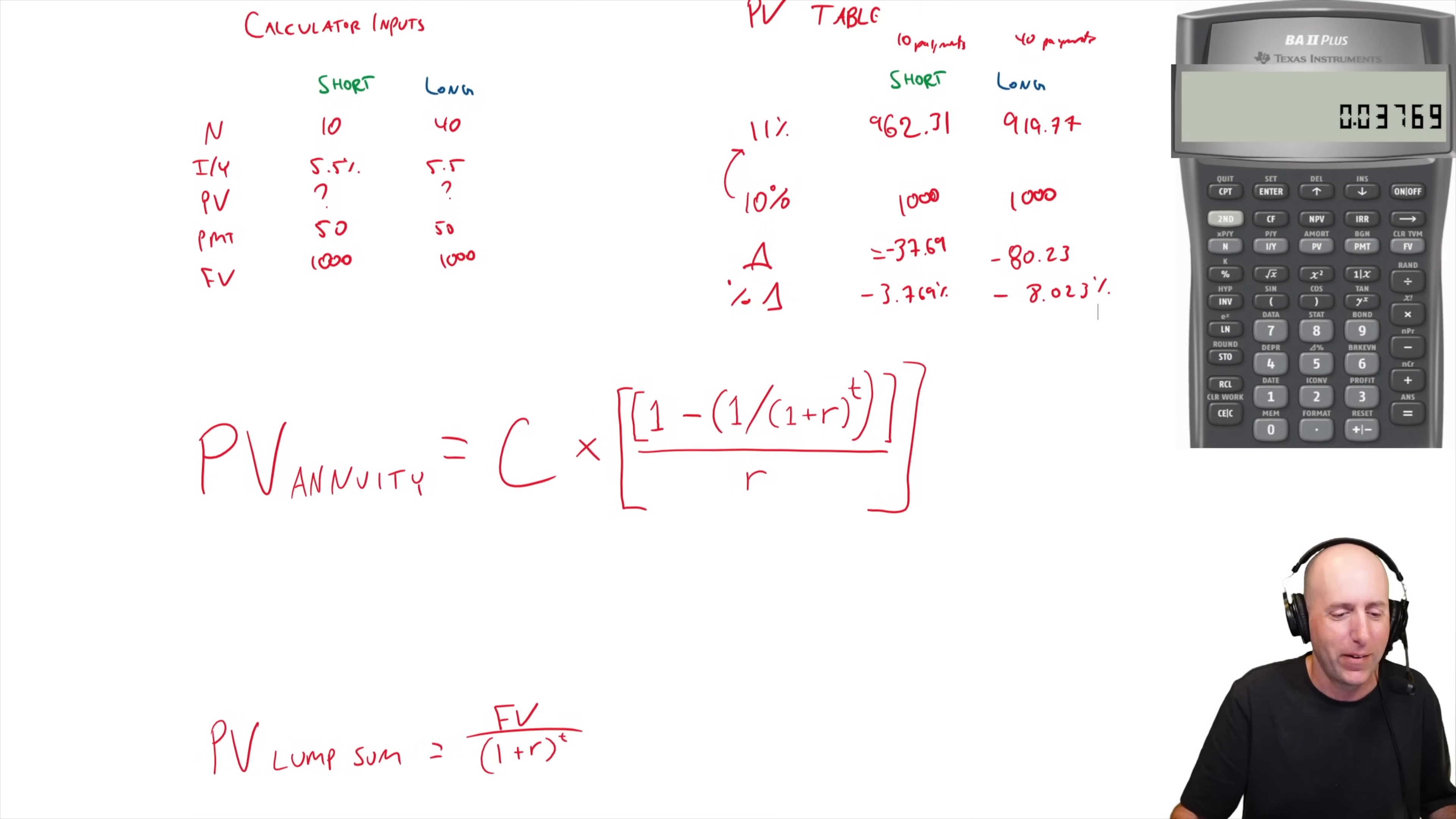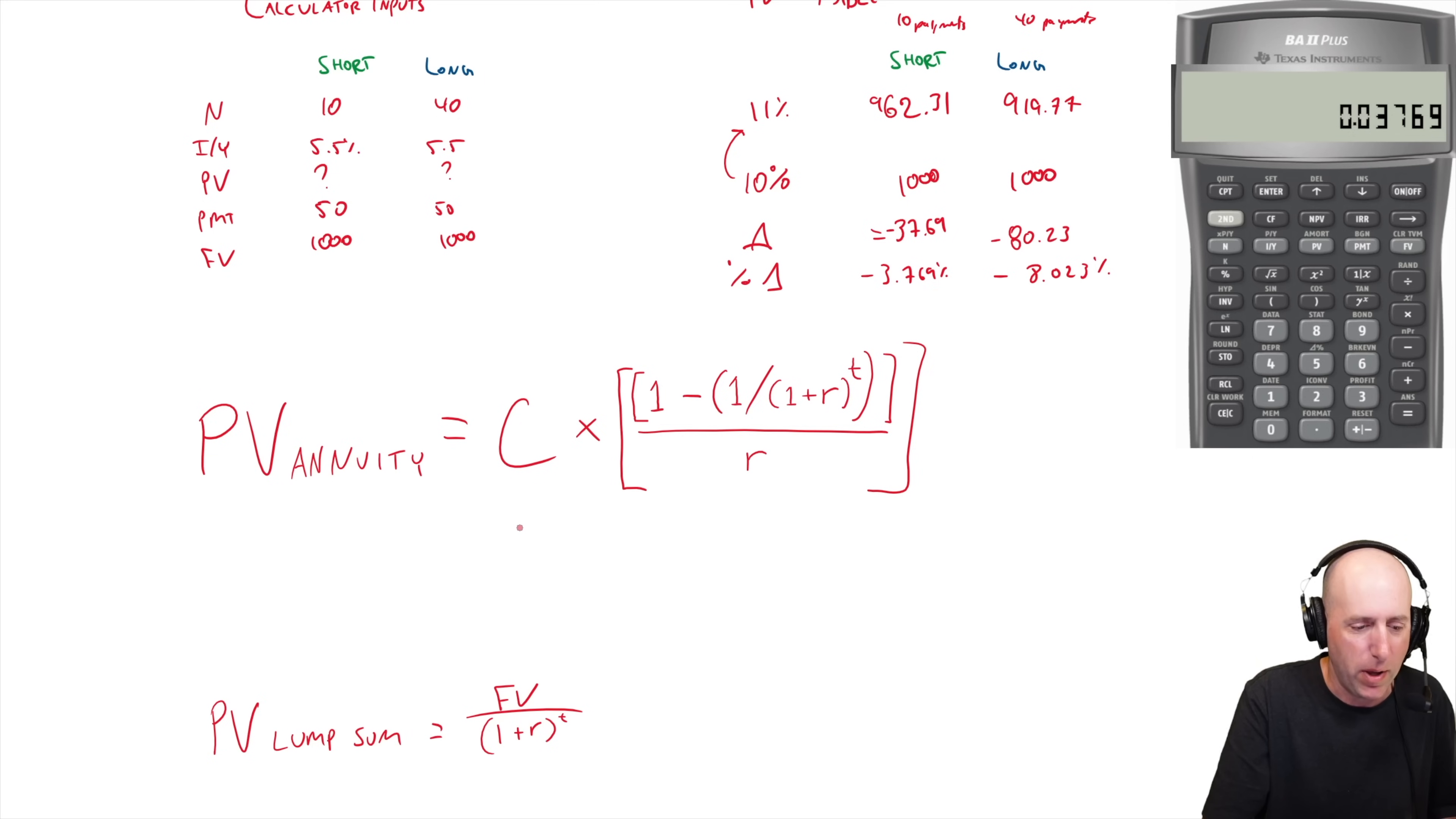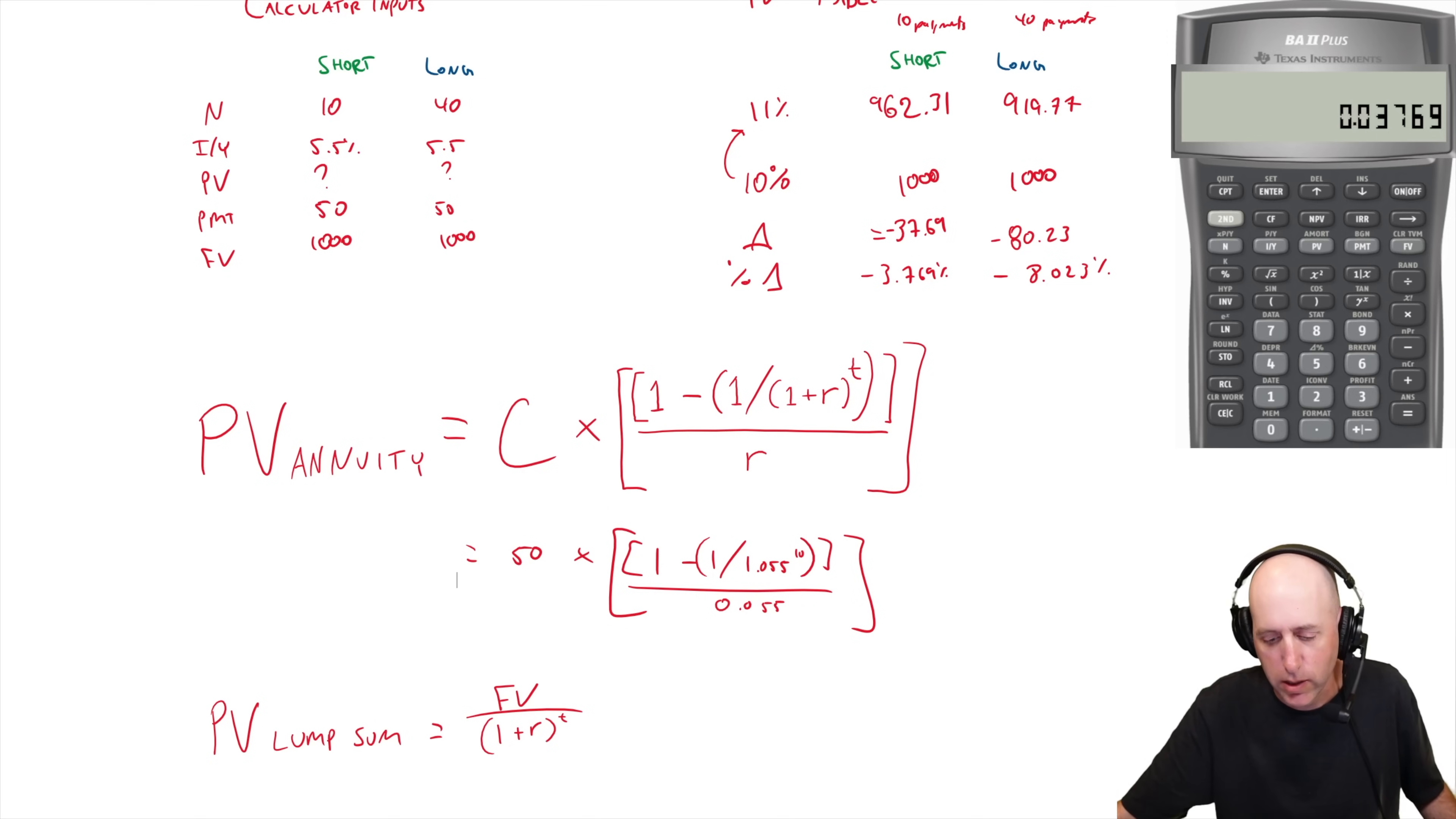Let's do Bond Short at 11% by hand. The payment is 50 dollars times 1 minus 1 over 1 plus that rate, 1.055, 5.5 percent to the T, it's 10 years, all divided by 0.055. That's the present value of those payments, those regular interest payments. So 1.055 to the power of 10, 1 over X, 1 minus that number, so minus 1 hit the plus minus.